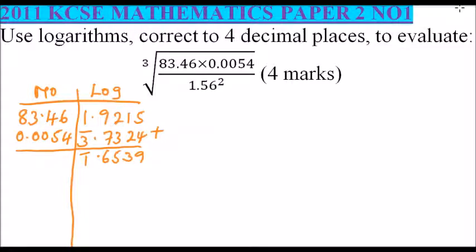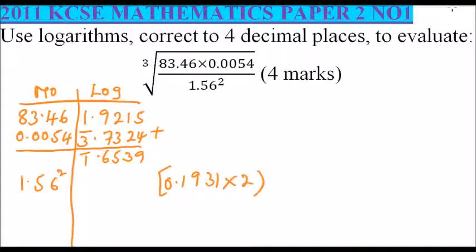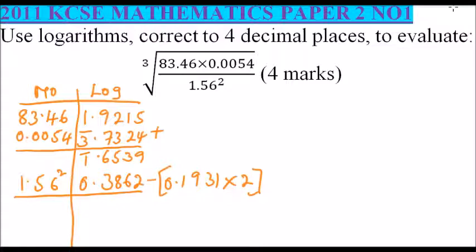Now we have the number 1.56 squared. To get that, aside we find the logarithm of 1.56, which is 0.1931. We multiply by 2 to represent the square, so 0.1931 times 2 gives 0.3862. We put a line there because it is a division, so we subtract.